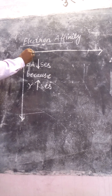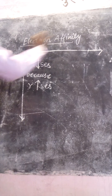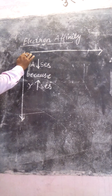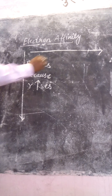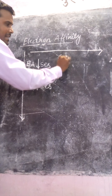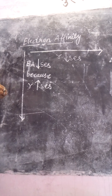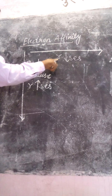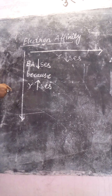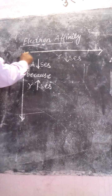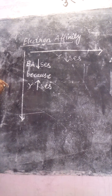In the case of across the period, electron affinity increases because R decreases. When R decreases, the distance decreases, the outermost shell is closer, and that results in greater attraction of the electron into the outermost shell. That is why electron affinity increases across the period. I hope you understood today's topic on electron affinity. Thank you.